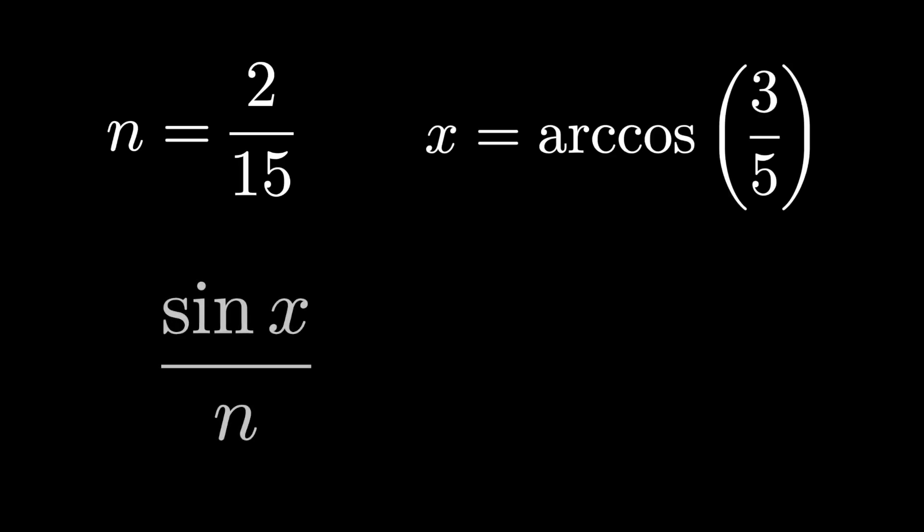If n is 2 over 15 and x is arc cosine of 3 fifths, then find sin x over n. Of course, all you need to do is cancel the n's to get si of x, which is 6 and happens to be the correct answer.